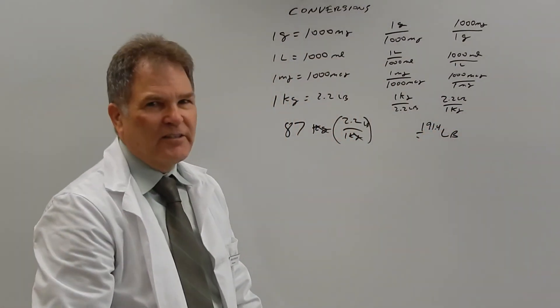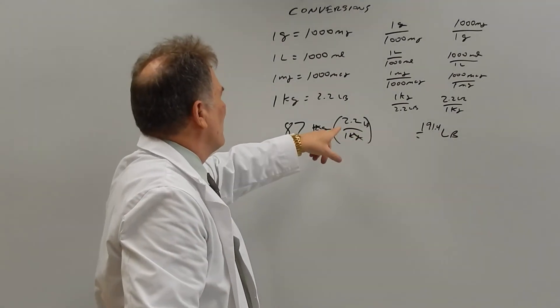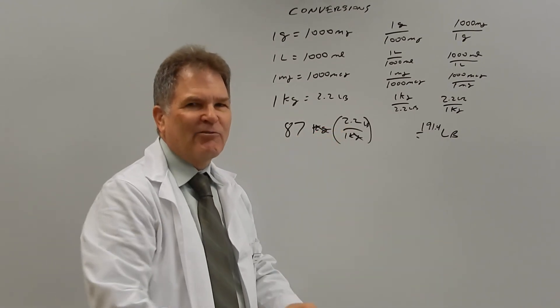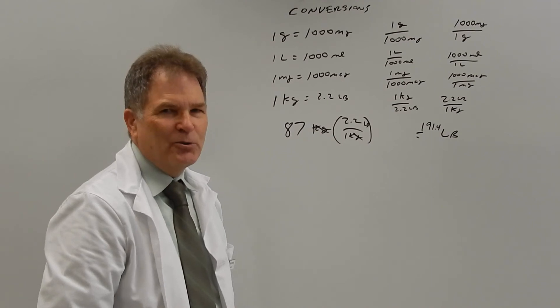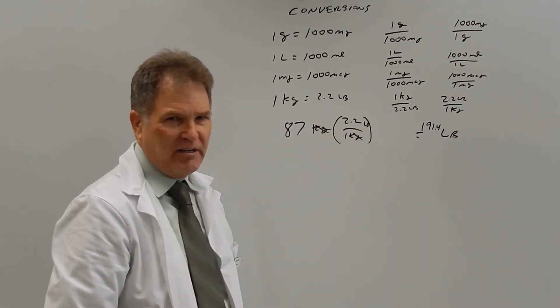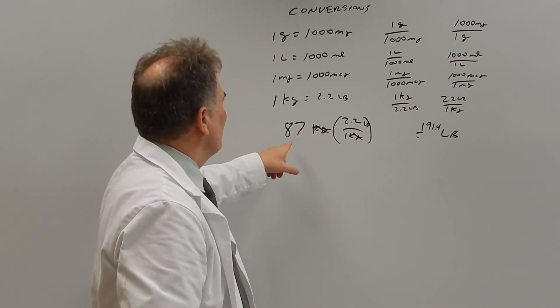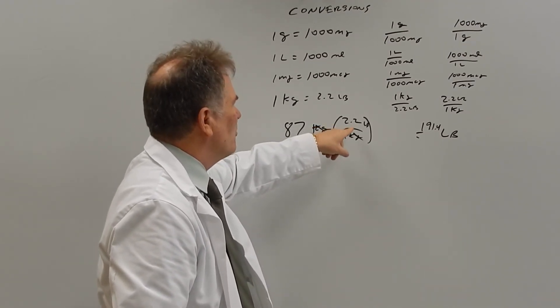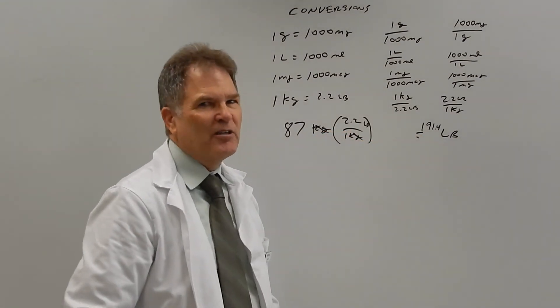I've seen a lot of textbooks say you change kilograms to pounds, you multiply by 2.2. Stuff like that drives me nuts, because you're not multiplying by 2.2, you're multiplying by 2.2 pounds over one kilogram, which is actually one. So if you multiply 87 kilograms times 2.2, you would have 191.4 kilograms.